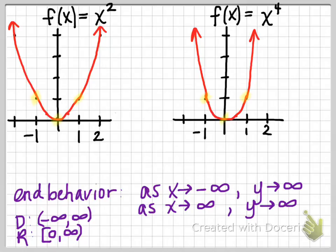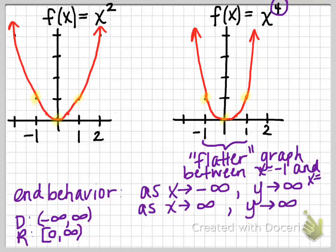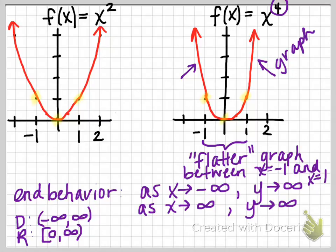In terms of differences: the differences occur between negative 1 and 1. The higher the exponent — as with y equals x to the fourth — the flatter the graph, meaning it gets closer to the x-axis between x equals negative 1 and x equals positive 1. The other difference is on the outer edges: the function with the higher exponent grows more quickly, so the graph rises more steeply.